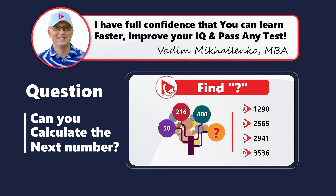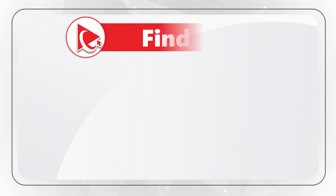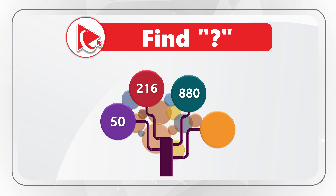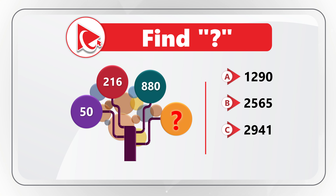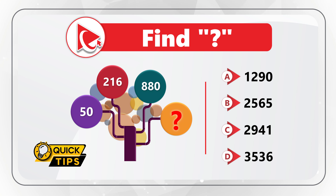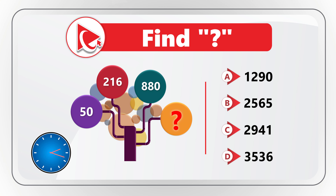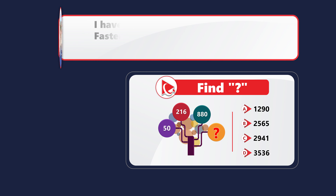Here's an amazing question where we need to find the missing number. You're presented with a tree-looking structure with numbers in circles on the top. Starting from the left, the numbers are 50, 216, 880, and then a missing number. You need to select from four choices: A is 1290, B is 2565, C is 2941, and D is 3536. Here's a quick hint — take a close look at what you see in the picture: circles, stems, and numbers. Do you think the different colors of the circles matter? Give yourself 10 to 15 seconds to see if you can figure it out. I am moving forward to share my version of the solution.